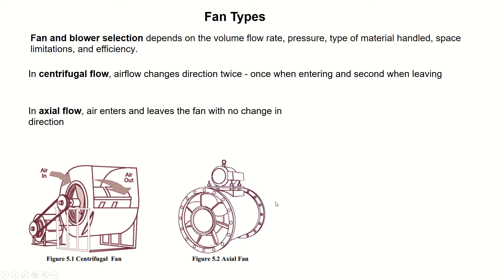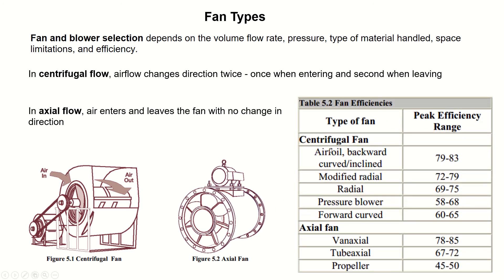This table shows fan efficiencies. The maximum efficiency for a centrifugal fan is for the airfoil backward curved type, which is 79% to 83%. The maximum efficiency for axial fans is also shown in the table.